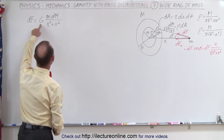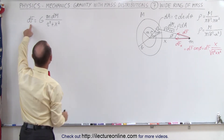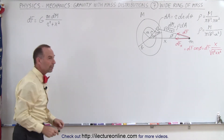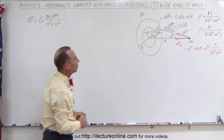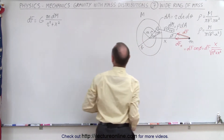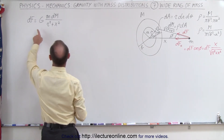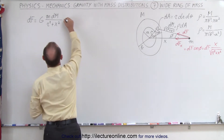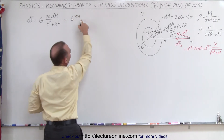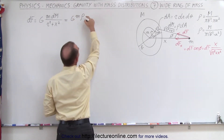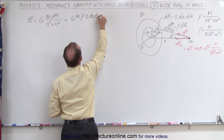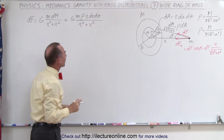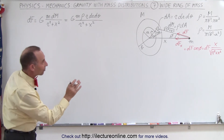Starting with the general gravitational equation for a small section dF, it equals G times the product of the two masses divided by the distance squared. We replace dM with density times dA, which is r dr dθ, all divided by r² + x². Now we're going to find dFx, the x component of that force, where x is a constant.